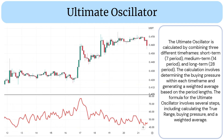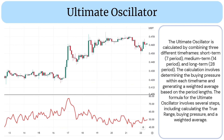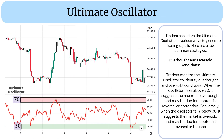The ultimate oscillator ranges between 0 and 100, with values above 70 indicating overbought conditions and values below 30 indicating oversold conditions. Traders use the ultimate oscillator to identify potential trend reversals, divergences, and to assess the strength of price movements.